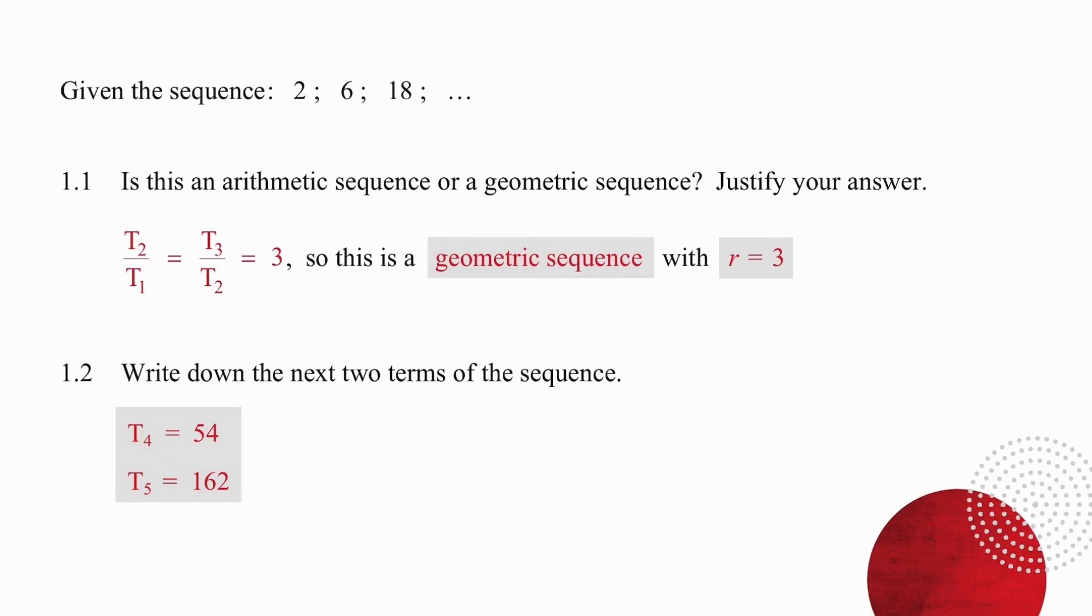In question 1.1 we need to justify the type of sequence. To do that we need to be observant. Notice that there is not a common difference. So if we divide the terms, six divided by two we get three and again term three divided by term two we get three. So we have a geometric sequence with a ratio of three and we have justified our answer.